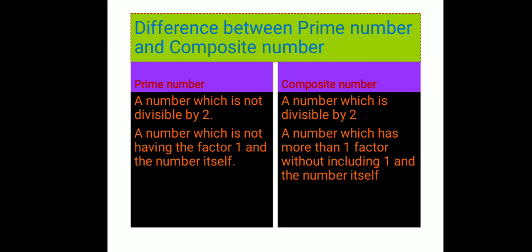The difference between prime number and composite number: a prime number is not divisible by two — like one, three, and five. The second point is a prime number has no factor other than one and the number itself. A composite number is divisible by two or more factors, and has more than one factor without including one and the number itself.